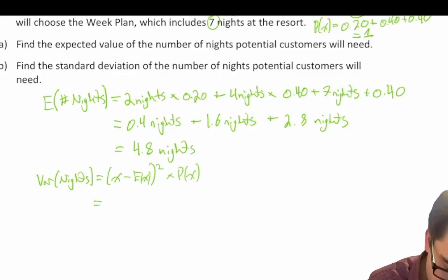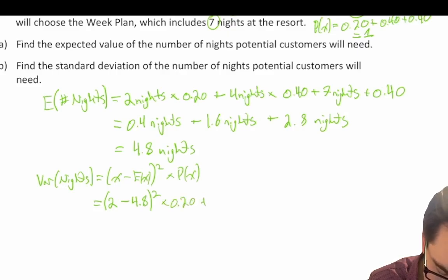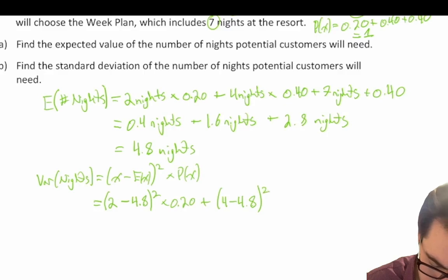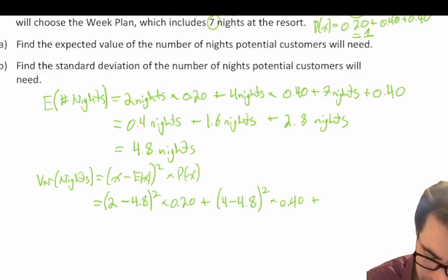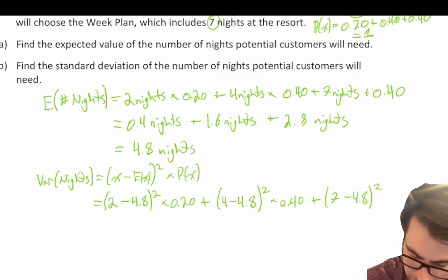So we have: two nights minus the expected value of 4.8, squared, times the probability that occurs which is 20% of the time, plus four nights minus the expected number of nights squared times the probability that occurs which is 40% of the time, plus seven nights minus the expected value of 4.8 squared times the probability that occurs, which is again 40% of the time.